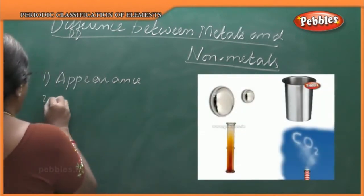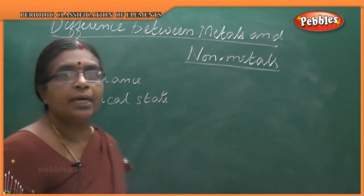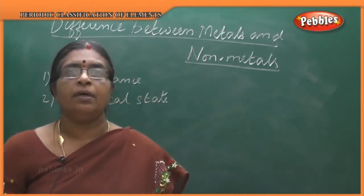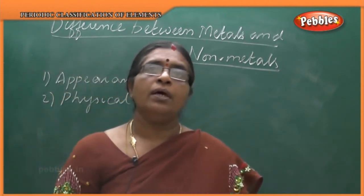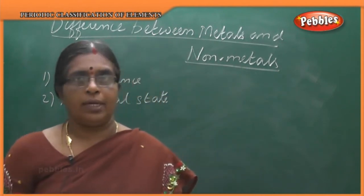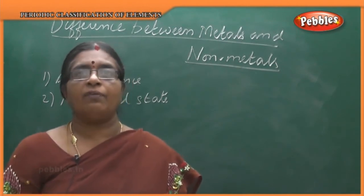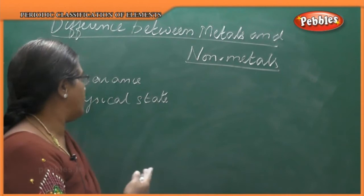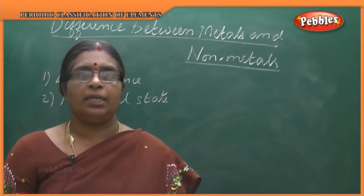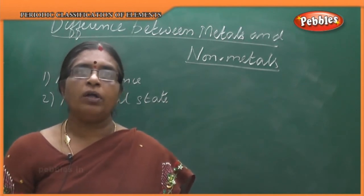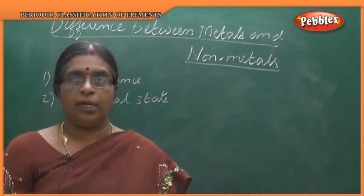Next is physical state. All metals are solids — exception is mercury, which is a liquid. For non-metals, they are mostly soft solids and also gases. Exceptions are diamond, which is a very hard solid, and bromine, which is a liquid.